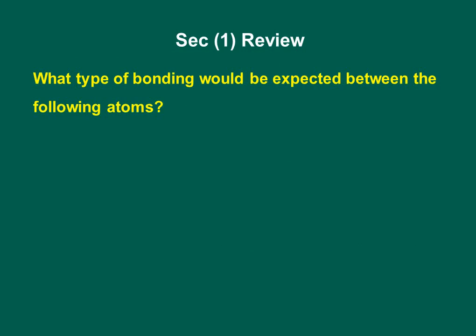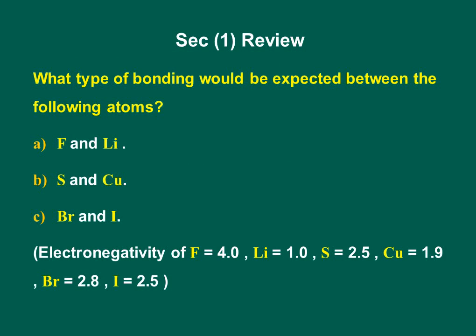Before discussing Section 2, let's review Section 1. What type of bonding would be expected between the following atoms? Fluorine and Lithium, Sulfur and Copper, Bromine and Iodine. Given that the electronegativity of Fluorine equals 4, Lithium equals 1, Sulfur 2.5, Copper 1.9, Bromine 2.8, and Iodine 2.5. Pause the video until you finish.